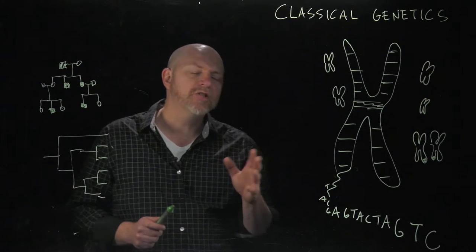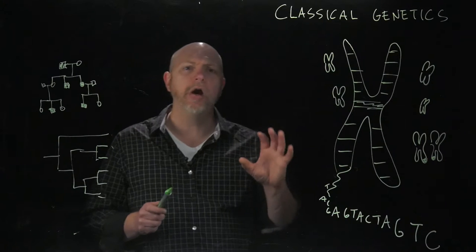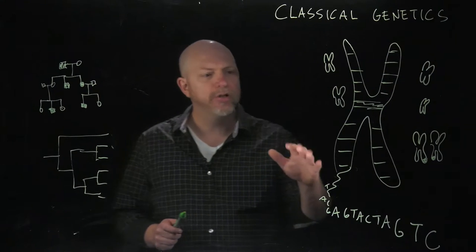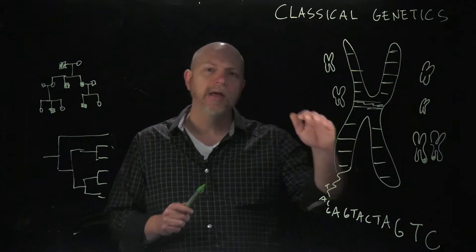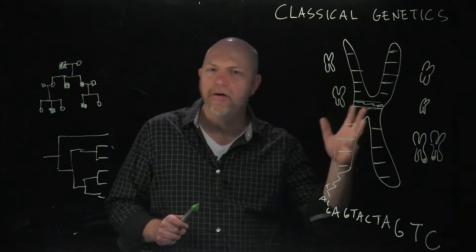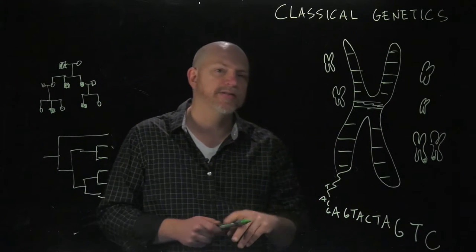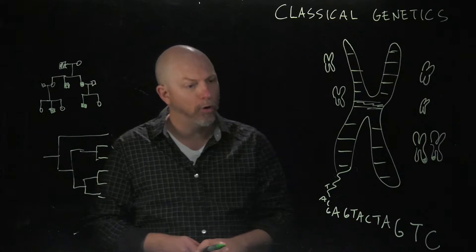But in addition to the historical differences, there's also kind of a hierarchical difference. Classical genetics focuses on everything at the level of the chromosome and above - things that we can see through the microscope and with our naked eyes, the physical structure of chromosomes.